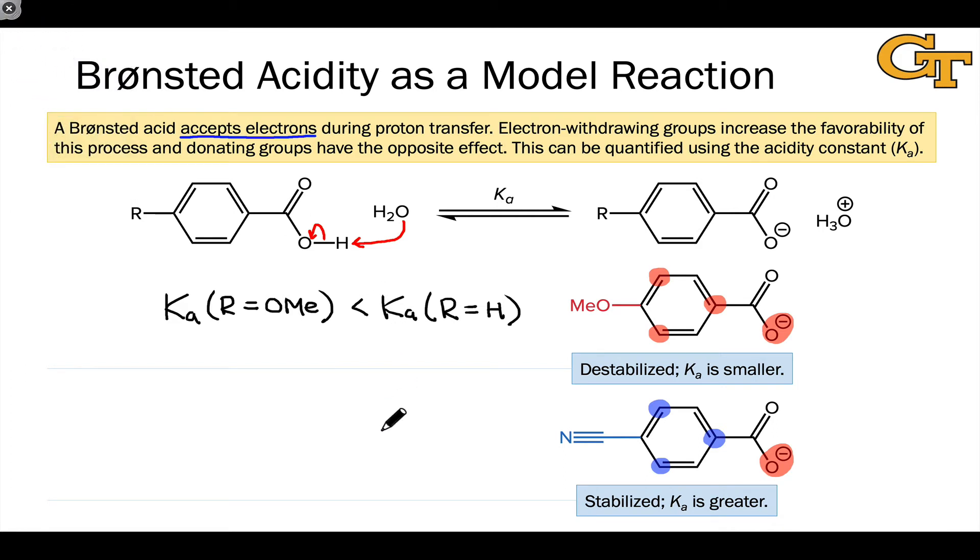And so bottom line is that when this is an electron withdrawing group, we see the opposite situation. The conjugate base is now more stable, the starting benzoic acid is now more acidic, and quantitatively the Ka value for the relatively electron poor benzoic acid, we might say the cyano substituted benzoic acid, is now greater than Ka for benzoic acid itself, where R equals H.